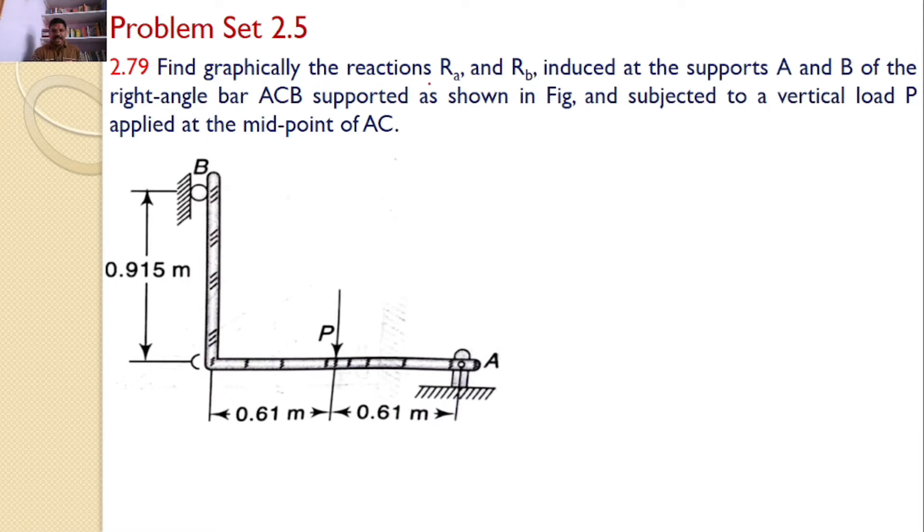Find graphically the reactions Ra and Rb induced at the supports A and B of the right angle bar ACB supported as shown in the figure and subjected to a vertical load P applied at the midpoint of AC.